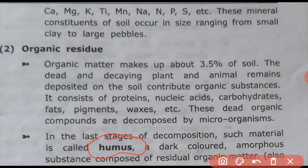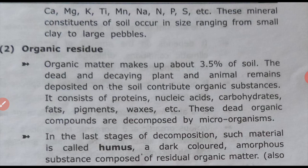Humus is a dark colored amorphous substance composed of residual organic matter. It is an amorphous, powdery form resulting from decomposition where further decomposition is not possible — a dark and amorphous powdery form.